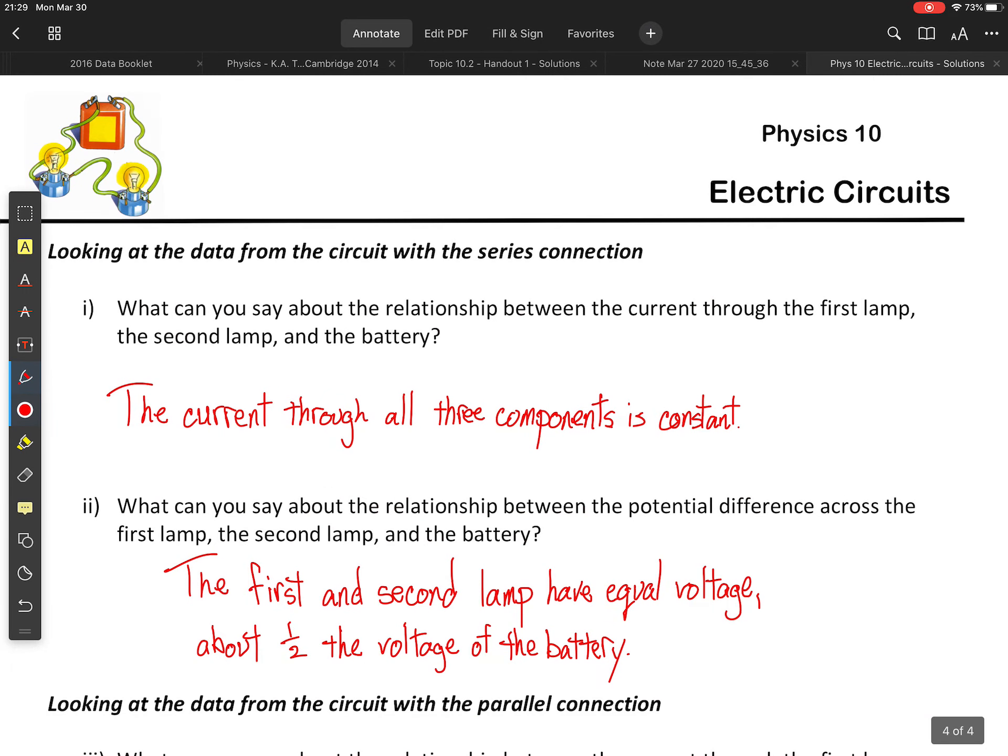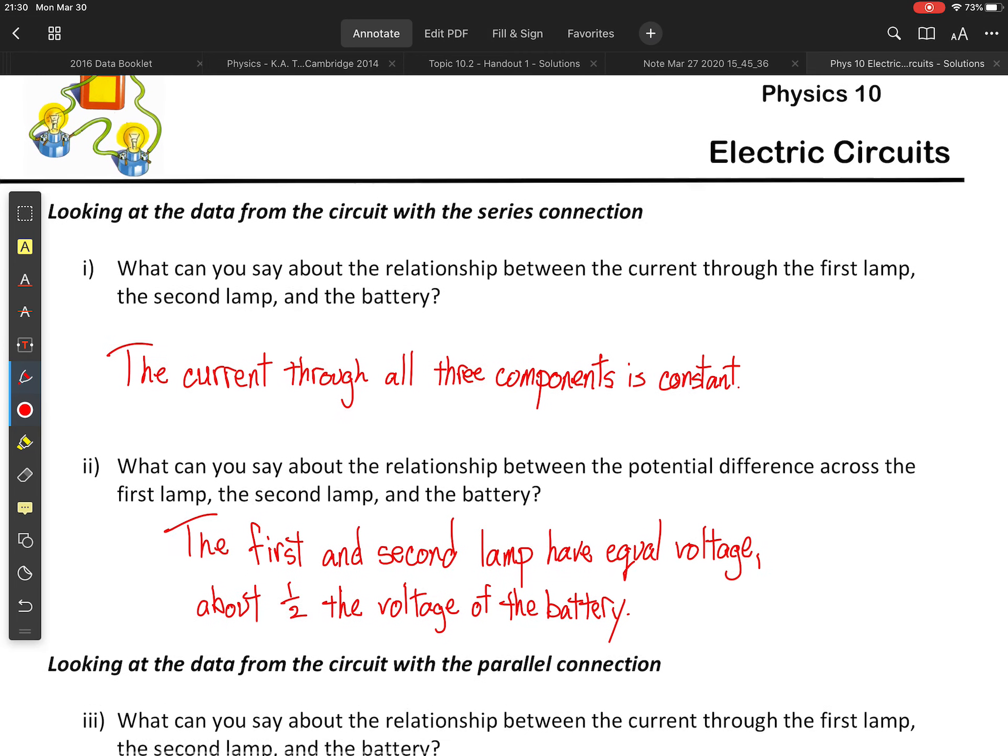Okay, so we're looking at the series connection here, and what would we say about the current through the first lamp in relation to the second lamp, not ramp, and the battery. And because we have a simple loop here, the current through all three components is constant.